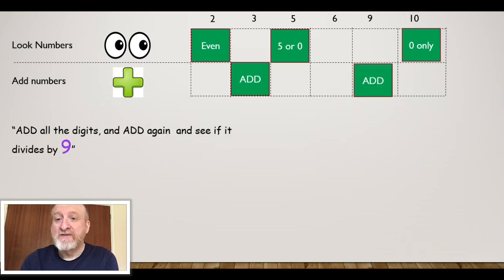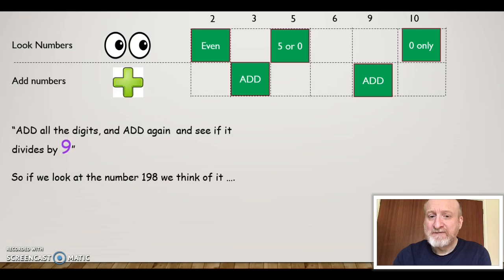Now let's look at 9. Now I call this the add and add again rule to see if you can divide by 9. So if we look at the number 198, we think of it like this: 1 + 9 + 8.